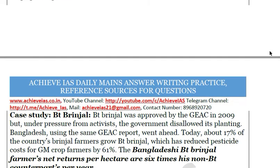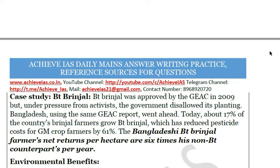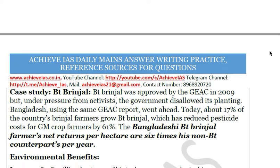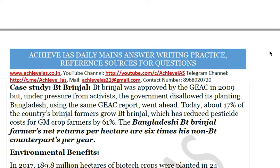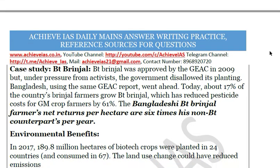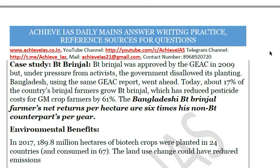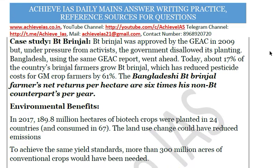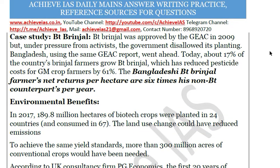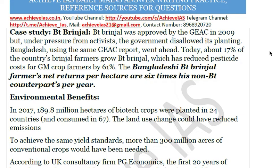A key case study is Bt Brinjal. The Genetic Engineering Appraisal Committee approved it in 2009, but under pressure from activists the Indian government disallowed its planting. Bangladesh, however, used the GEAC report and went ahead — today about 70% of Bangladesh's brinjal farmers grow Bt Brinjal, reducing pesticide costs by 61%. Bt Brinjal farmers' net returns per hectare are six times that of their non-Bt counterparts per year.